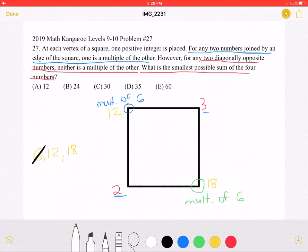The question asks for the sum of these numbers. So we have 2 plus 3 plus 12 plus 18, which is equal to 35.